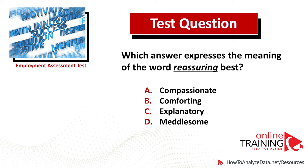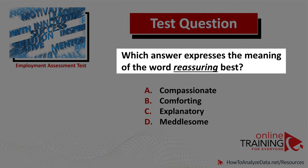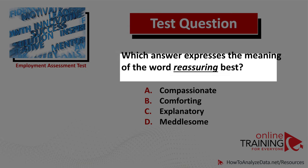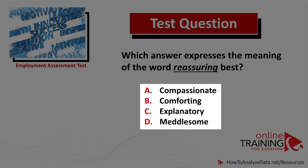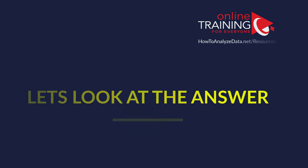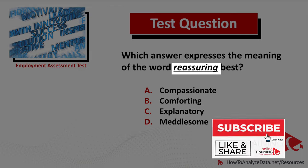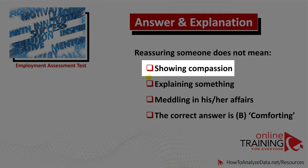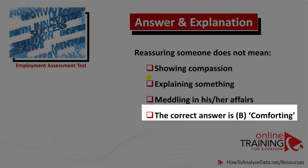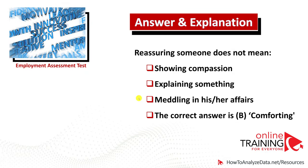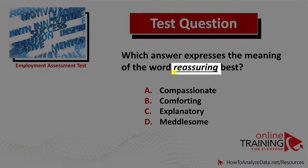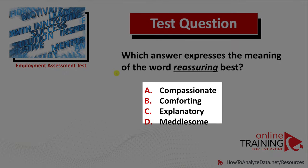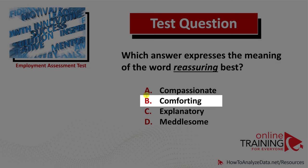A lot of times you might get a question that validates your knowledge of the meanings of English words. Which answer expresses the meaning of the word 'reassuring' best? The four choices are: compassionate, comforting, explanatory, and meddlesome. To answer this, understand that reassure typically means removing doubts or fears for someone. Reassuring does not mean showing compassion, explaining something, or meddling in affairs. The correct answer is choice B: comforting, which is very similar to the meaning of the word reassure.